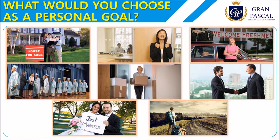What would you choose as a personal goal? You have a set of pictures and you have to choose only one. What would it be? The first is buying a house — you can observe some people buying a house. The next picture is get promoted: when you are good in your job and your boss promotes you — 'conseguir un ascenso'.